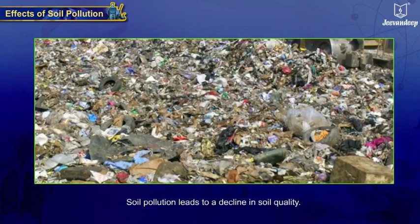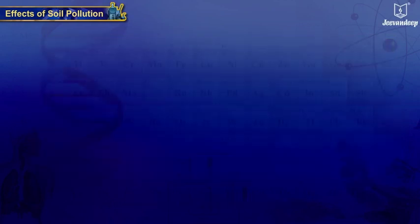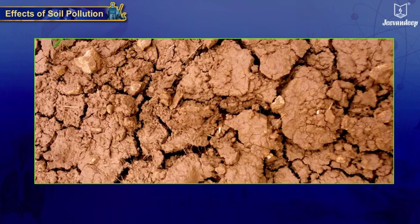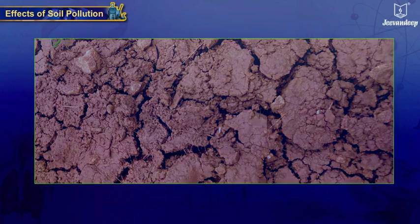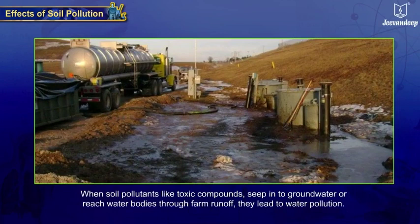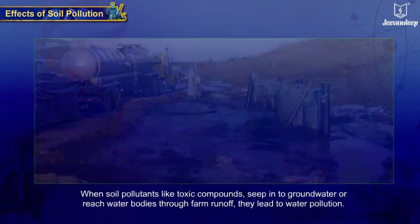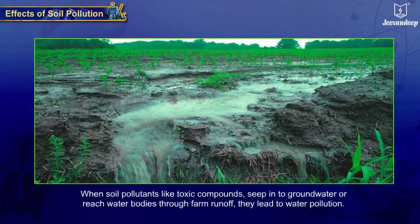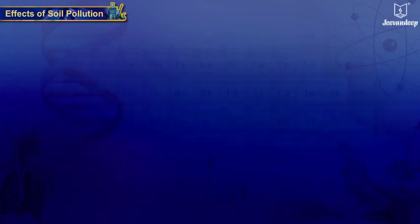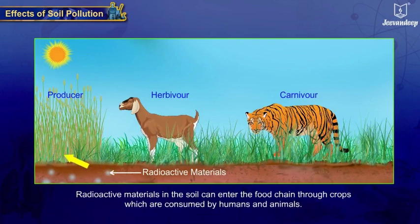Soil pollution leads to a decline in soil quality, including deterioration of soil fertility and productivity. When soil pollutants like toxic compounds seep into groundwater or reach water bodies through farm runoff, they lead to water pollution. Radioactive materials in the soil can enter the food chain through crops, which are consumed by humans and animals.